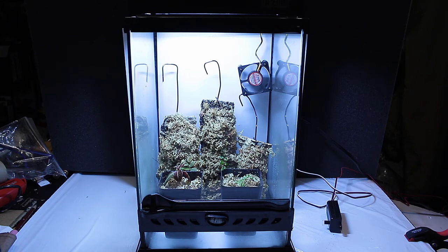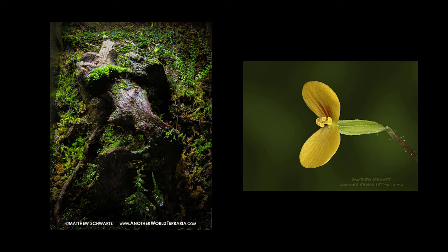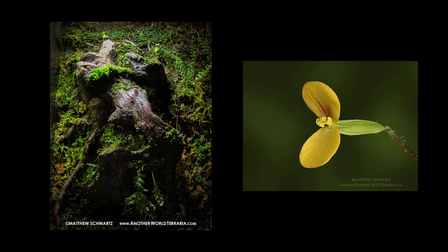All right, there you have it guys. That's how you convert an ExoTerra Nano from a wire mesh lid to a glass lid. Thereby keeping the humidity in so you can create a terrarium or vivarium for your tropical plants, orchids, ferns, moss, or whatever you desire. If you have any questions, go ahead and post them down in the comments or on my blog. Let me know what you guys think. Thanks a lot for watching, and I'll check you later.